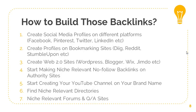Number two: start getting profiles on bookmarking sites such as Reddit and StumbleUpon — there are many other platforms as well. Number three: create Web 2.0 properties. These are free platforms like WordPress, Blogger, Wix, and Jimdo. Create profiles related to your brand, write good quality content, and set up an About Us page, Privacy Policy page, and Terms and Conditions page to make your Web 2.0 properties look professional. You are setting up your brand for brand awareness, not for any black-hat practices.